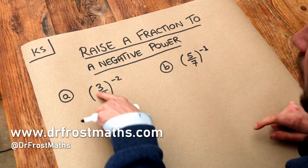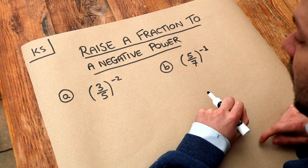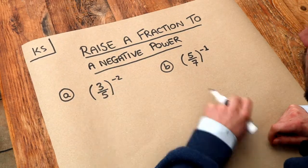Now in the previous video we saw how we could have an integer, a whole number, to a negative power. But now we've got a fraction to a negative power.